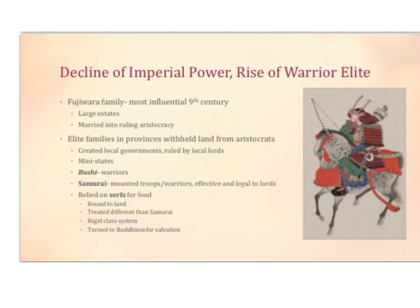After a while, there's a decline of imperial power and a rise of the warrior elite. The Fujiwara family, most influential in the 9th century in Japan, gained large estates — large areas of land — and married into the ruling aristocracy, gaining power. Elite families in provinces withheld land from aristocrats and created local governments ruled by local lords, forming a sort of mini-states. Bushi were warriors, and samurai were mounted troop warriors who were effective and loyal to lords. A samurai was a bushi, but a bushi was not always a samurai. Everyone relied on the serfs for food; serfs were bound to land. There was a rigid class system, so if you were a serf, you were probably going to stay a serf.